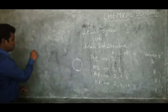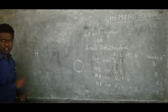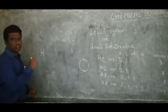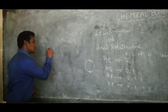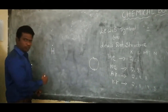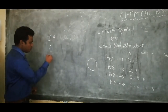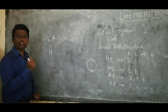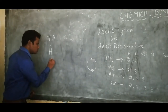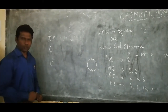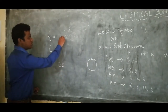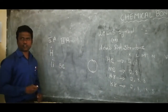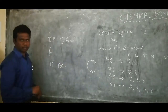The Lewis dot structure can be represented for any atom — we have inner shells and outermost shells where electrons are present. For example, the first group element hydrogen: the inner shell and nucleus of an element are represented by its symbol, and outermost shell electrons are represented by dots. Lithium, also a first group element, similarly has one valence electron. For the second group element beryllium, the valence electrons are 2, represented by two dots.